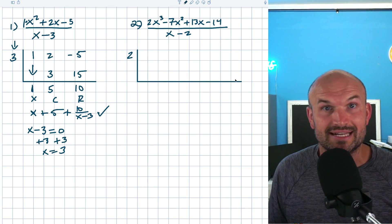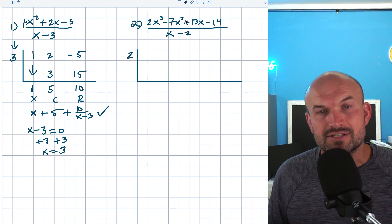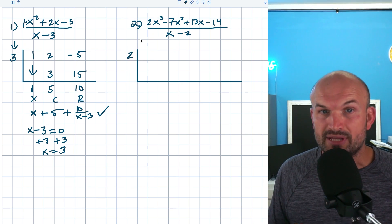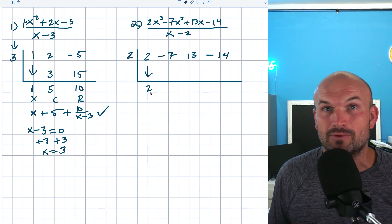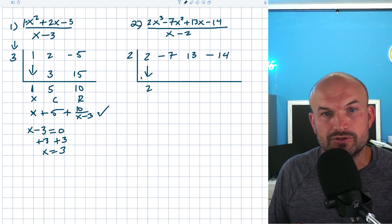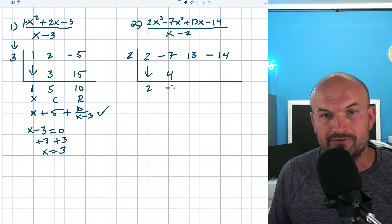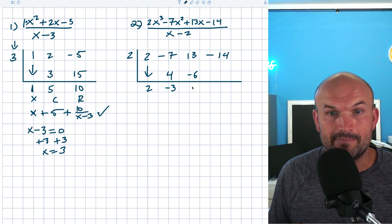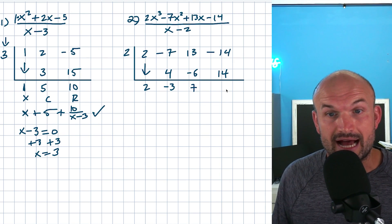I've got my synthetic division box. I'll take the coefficients for each term as well as my constant. Remember, these are easy problems so there are no gaps, but if you do have a missing term — like if there wasn't an X squared — you'd want to use zero as a placeholder. The first term is a freebie, bring it down. We multiply on the diagonal, add on the vertical. Two times two is four. Negative seven plus four gives negative three. Negative three times two is negative six. Thirteen plus negative six is positive seven. Seven times two is positive fourteen.